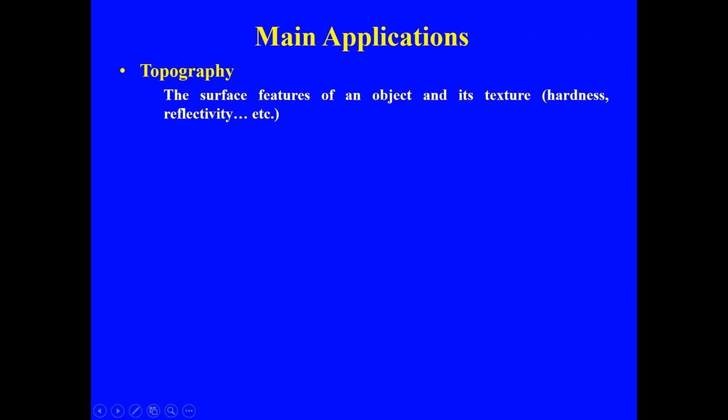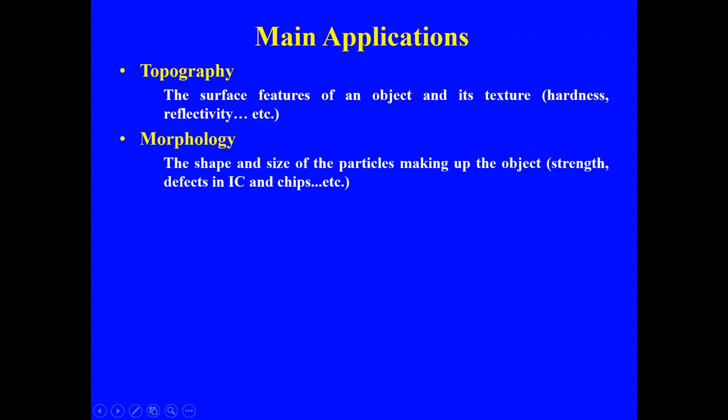The first application of the SEM is topography — it can give information about the surface features of an object. Texture is another aspect: using the SEM we can characterize the hardness of the surface of a sample, along with its reflectivity and so on.